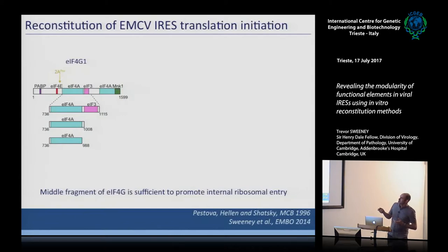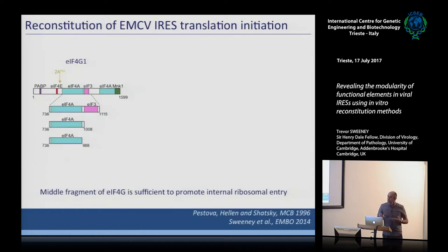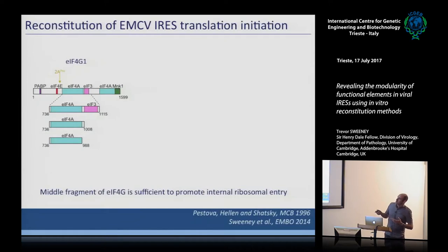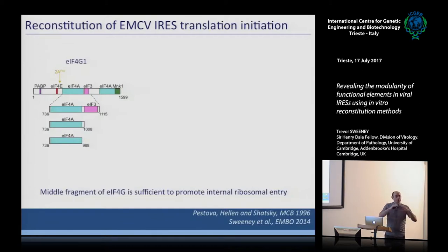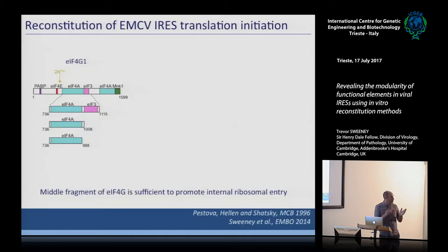What is this EIF4G protein? EIF4G is a very large scaffolding protein. It contains RNA binding domains for EIF4A — the helicase part of the EIF4F complex — an EIF4E binding position, binding sites for poly-A binding protein involved in mRNA circularization, and a binding site for the regulatory factor MNK kinase.